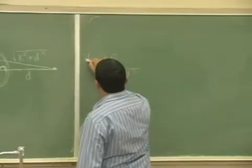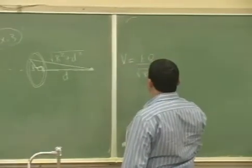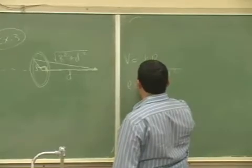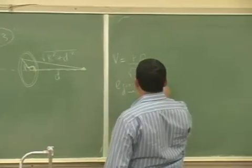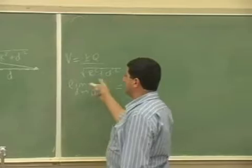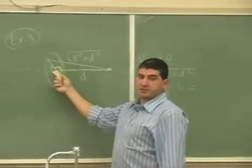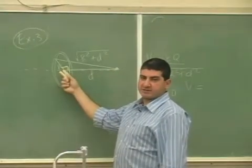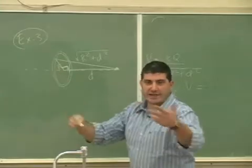As the limit as D goes to zero is what? If I go to the center of the ring, what should the potential be? KQ over R. They should all add up.